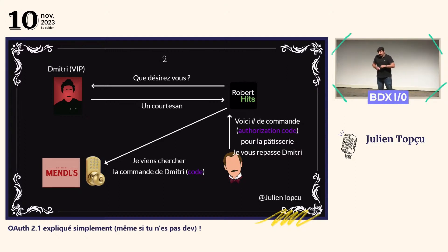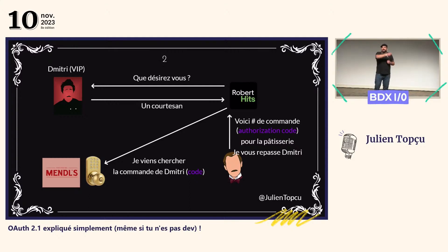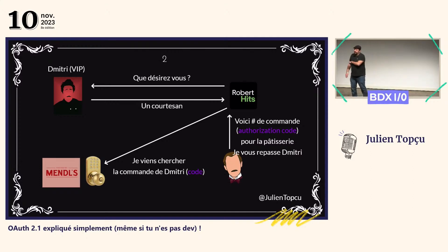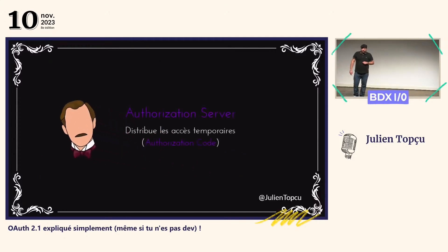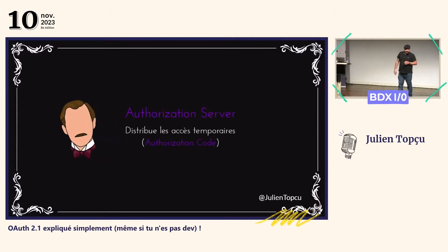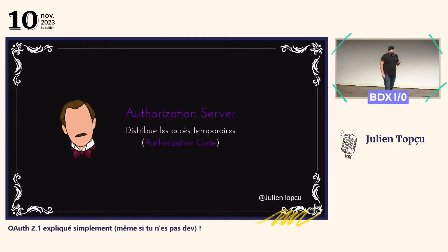That means that if the courier wants to have access to the pâtisserie, it will have to do the process with Dimitri from the beginning — authenticate, etc. So the role of the authorization server is to distribute temporary access, the authorization codes, to the third party.